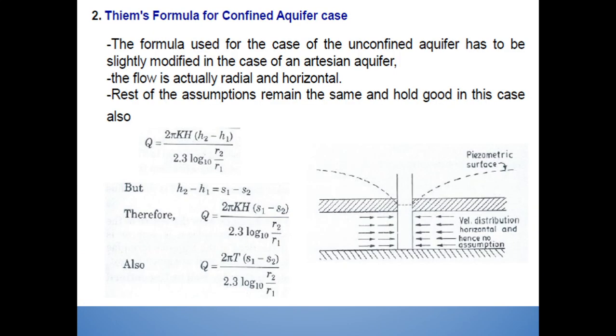The formula used for the case of the unconfined aquifer has to be slightly modified in the case of an artesian aquifer. The flow is actually radial and horizontal. Rest of the assumptions remain the same and hold good in this case also. Here you can find out the discharge q is equal to 2πkh(h2-h1)/(2.3 log10(r2/r1)).